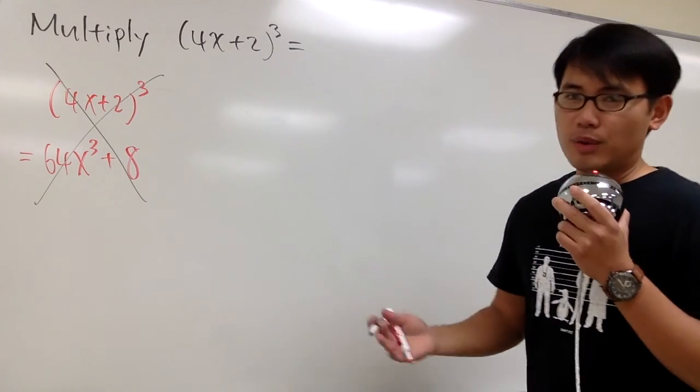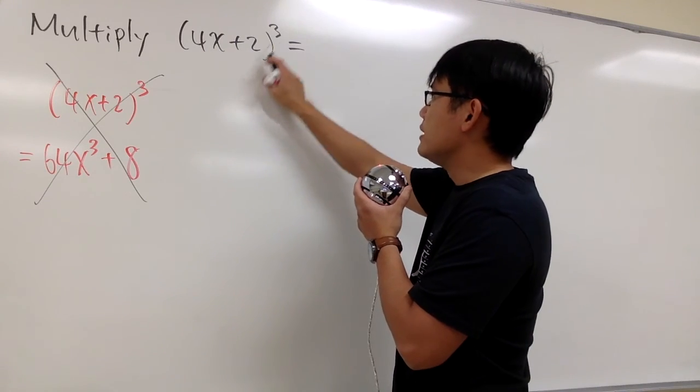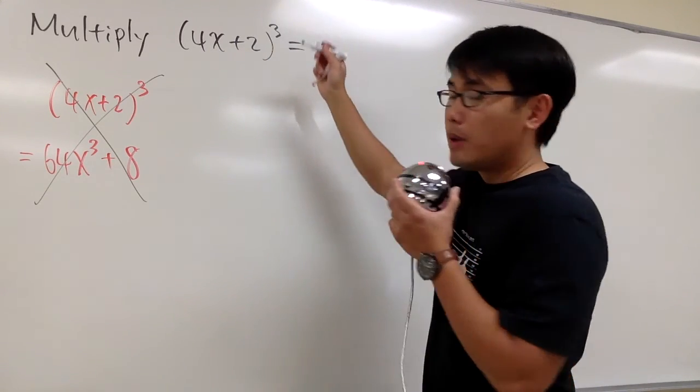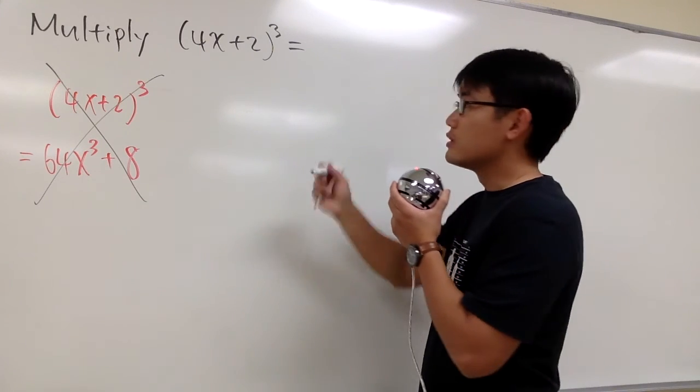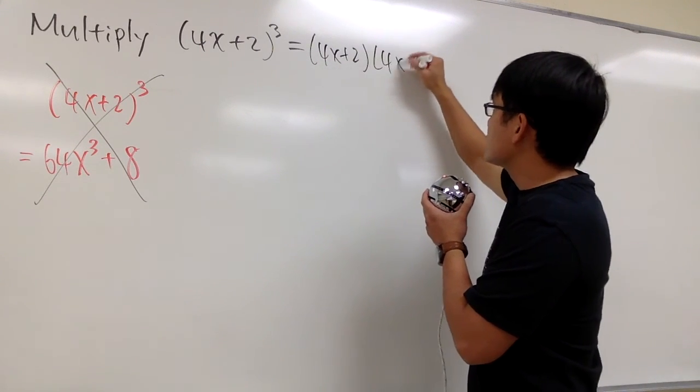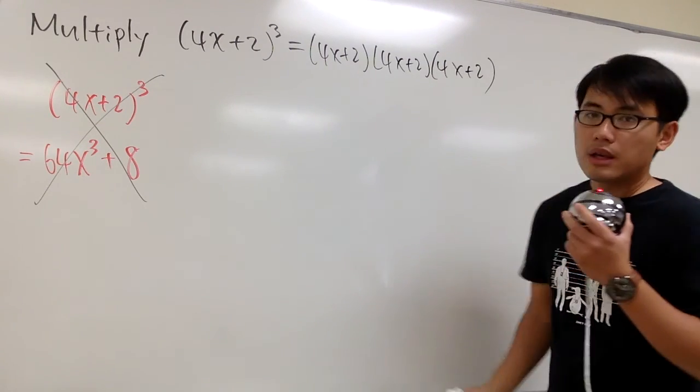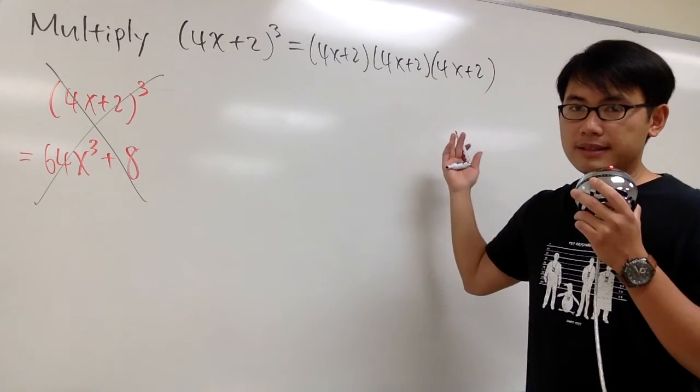This is the correct way to do it. When we have a binomial inside of the parentheses raised to the third power, the third power means we are going to write this down three times. So we have 4x plus 2 times 4x plus 2 and times one more, 4x plus 2.